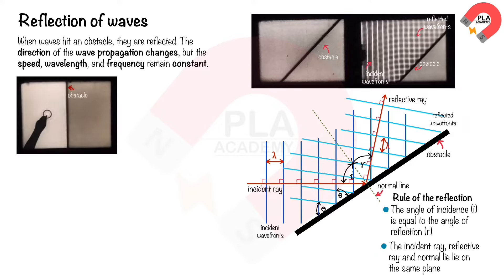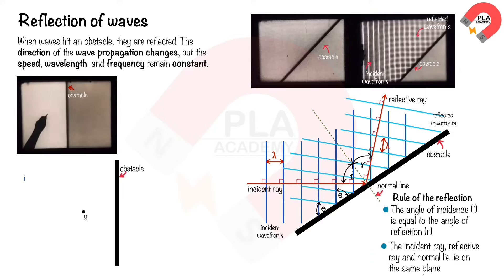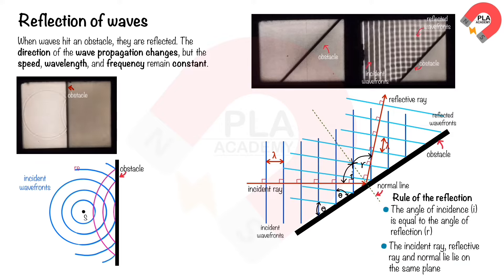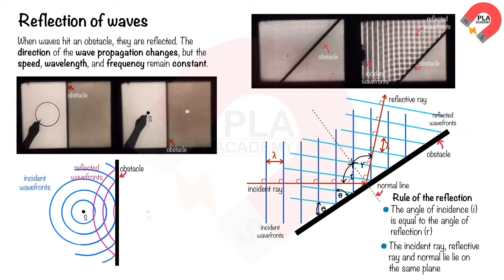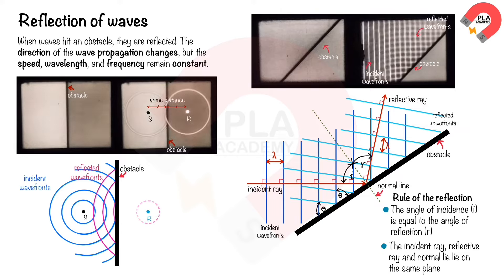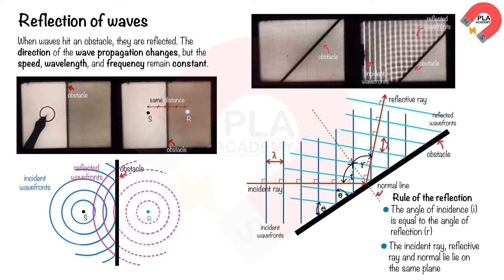Circular wavefronts can be reflected at a flat obstacle. The circular wavefronts are created from source S. They reflect at the flat obstacle, and an image of the source, R, is created behind the obstacle, from which the reflected waves appear to originate.